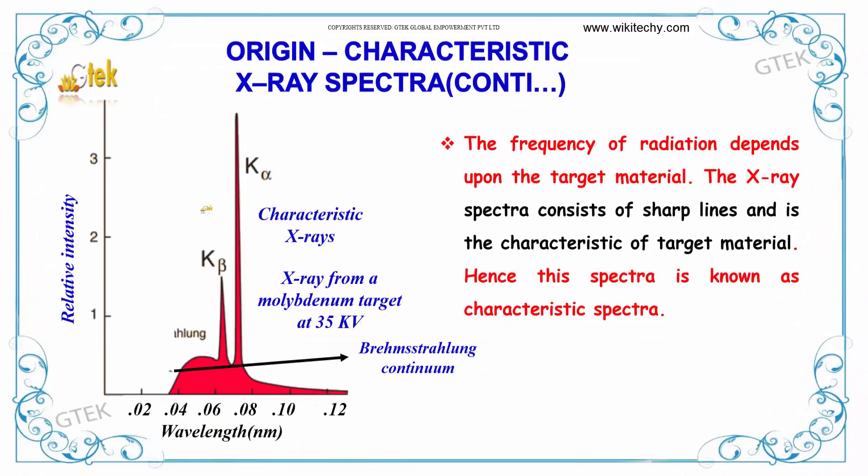The frequency of radiation depends upon the target material. You are able to see the X-ray from a molybdenum target at 35 kV. This X-ray spectra consists of sharp lines and is characteristic of target material. This spectra is known as characteristic spectra.